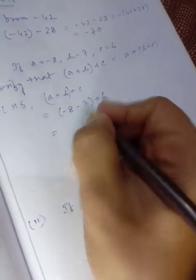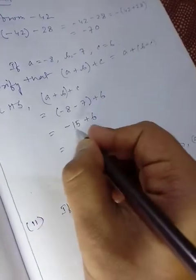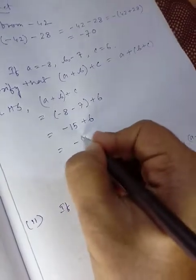-8 - 7 equals -15, plus 6. -15 + 6 = -9.